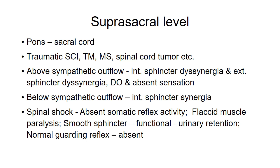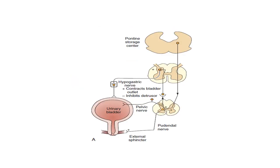In spinal cord injury patients during spinal shock, the normal guarding reflex will be absent. The guarding reflex is a storage reflex: during urine storage, distension of the bladder produces low-level afferent firing, which stimulates sympathetic outflow to the bladder through the hypogastric nerve, causing contraction of the outlet and inhibiting detrusor action. Through the pudendal nerve it produces external sphincter contraction, closing the external sphincter. This guarding reflex is also seen during coughing.